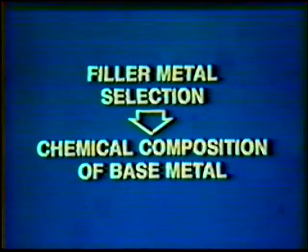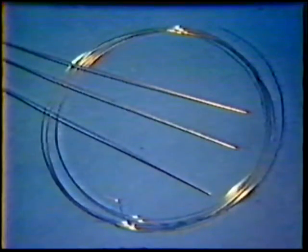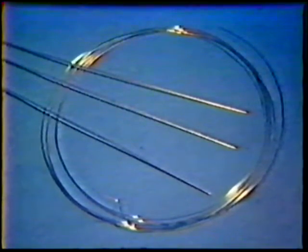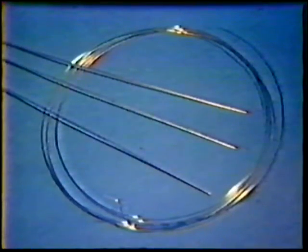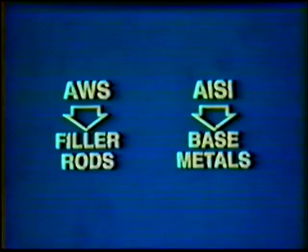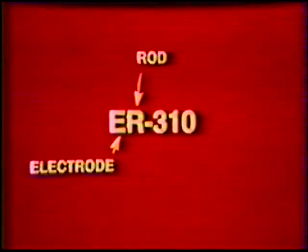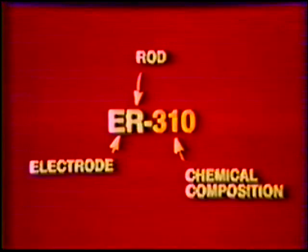The selection of filler metals for austenitic stainless steels is based on the chemical composition of the base metal. Filler metals used with the gas tungsten arc process are usually provided in pre-cut lengths or in coils. The filler metal is bare and solid, which eliminates the problem of moisture pickup as compared to covered electrodes. These filler metals should be kept in a clean storage area to prevent contamination. Bare filler rods are classified by the American Welding Society similar to the AISI classification of base metals. For example, an ER-310 is a stainless steel electrode or rod, indicated by the letters E and R. The 310 indicates that the filler rod has a chemical composition similar to a 310 base metal in the AISI classification.